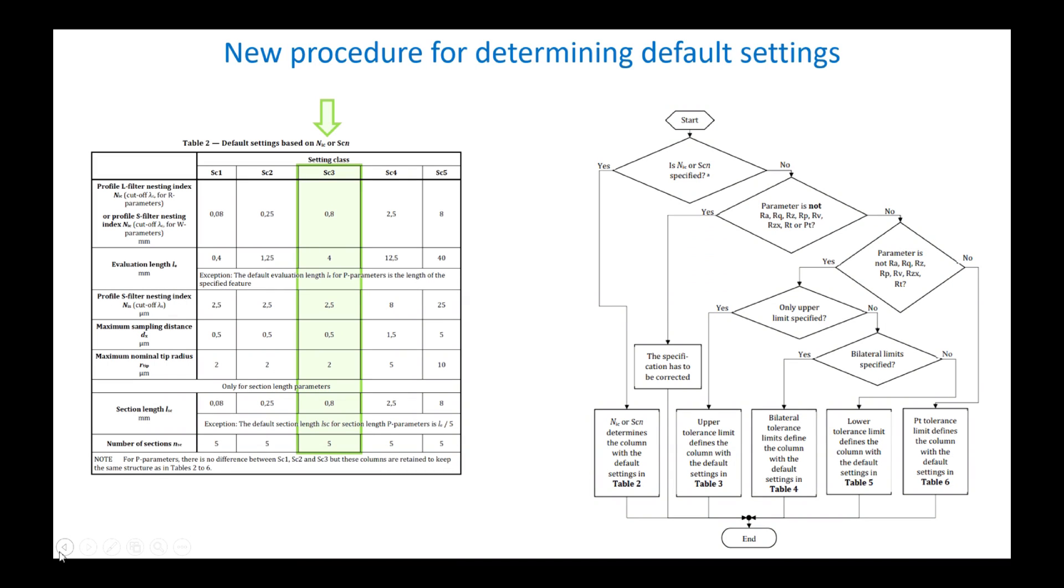If the idea of revising this procedure was laudable in itself, the solution of using setting classes remains complex. The limits applied to the tolerance to determine the class are not clearly supported by scientific publications. And in the end, on mechanical parts, the majority of cases end up with a cutoff of 0.8 mm. It would have been much simpler to make it the default directly in order to avoid such a complex procedure. It can be assumed that this chapter of the standard will be revised or simplified in the coming years.